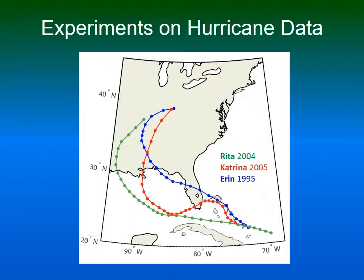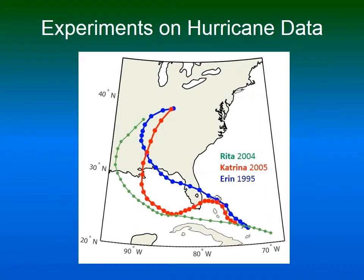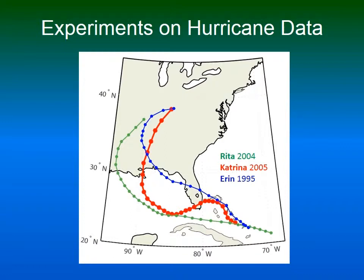Erin and Katrina first weaken over land when crossing Florida, then they re-intensify as they move over the warm waters of the Gulf of Mexico. Katrina, in contrast to Erin, crosses only the tip of Florida and loops longer over the Gulf, which is more similar to the path of Rita.